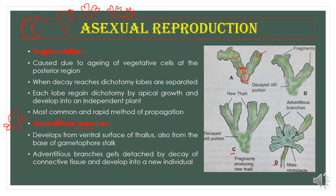Adventitious branches can also be formed from the base of the receptacle of the male gametophore or the female gametophore. Here the male receptacle has a gametophore stalk and a gametophore receptacle, and the adventitious branches develop from the ventral surface of the receptacle. So adventitious branches in Marchantia develop from two regions: the ventral surface of the thallus, or the ventral surface of the receptacle of the gametophore.